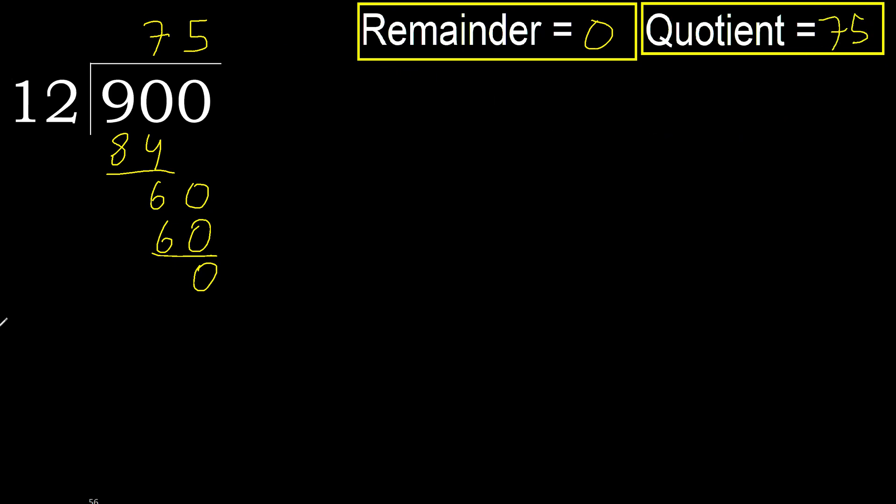Remainder 0. Therefore 900 divided by 12 is 75.